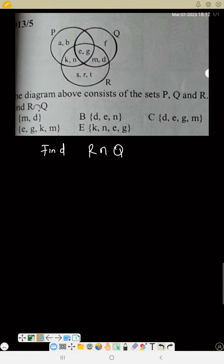Okay, look at the question. The diagram above consists of the sets P, Q, and R. Find R intersection Q.